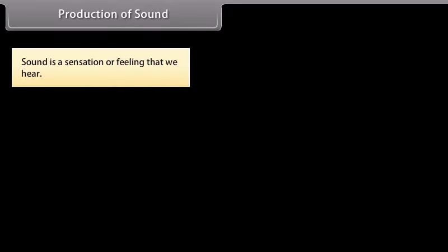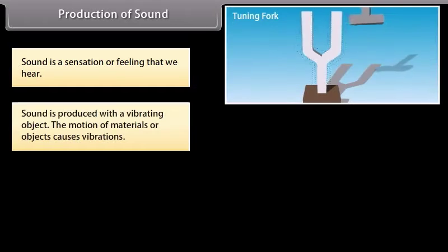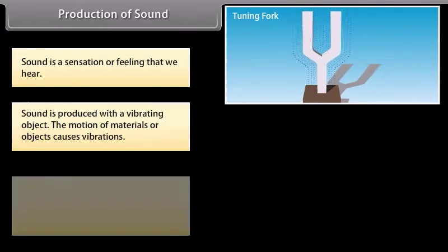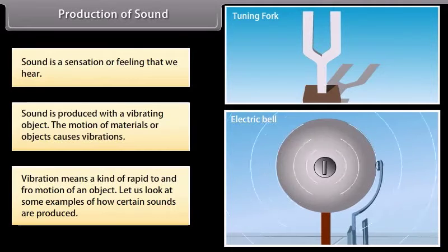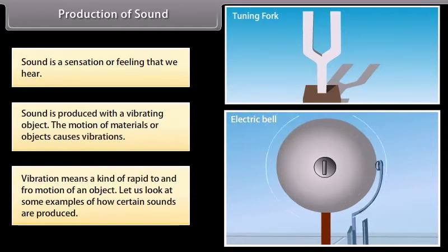Production of sound. Students, we know that sound is a sensation or a feeling that we hear. Sound is produced with a vibrating object. The motion of materials or objects causes vibrations. Vibration means a kind of rapid to and fro motion of an object. Let us look at some examples of how certain sounds are produced.